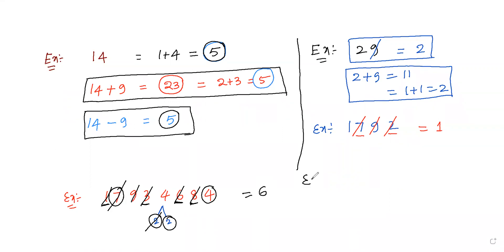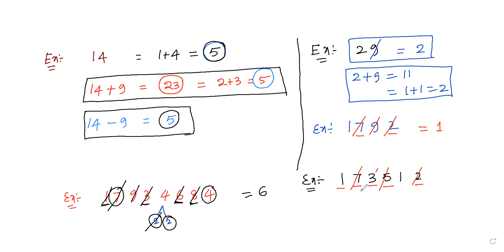Let me take another example to understand the casting of 9: 1, 7, 3, 5, 1, 2. Here 7 plus 2 is 9, so you can eliminate those. And 1 plus 3 plus 5 also equals 9, so you can eliminate those digits too. Finally, I am left with 1. So this is the DigitSum of the given number.